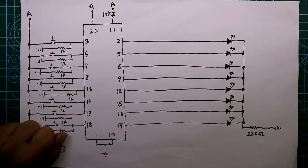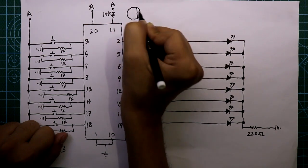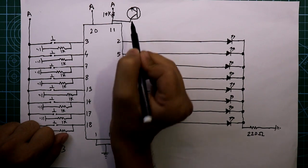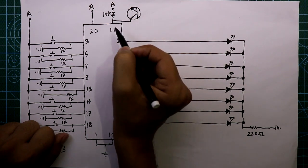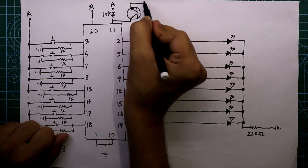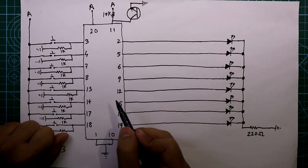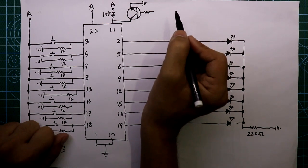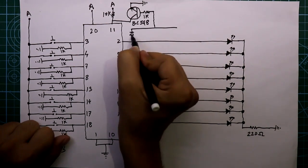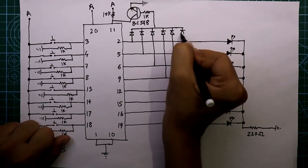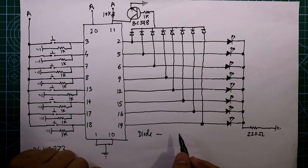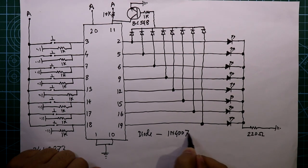Now we need one transistor — the BC548. Its collector is connected to the latch enable pin, which is pin number 11, and its emitter is connected to ground. Then we connect a 1 kilo ohm resistor to the base of the transistor. And then we have to connect 8 diodes from the output — these are the 8 diodes, type 1N4007.